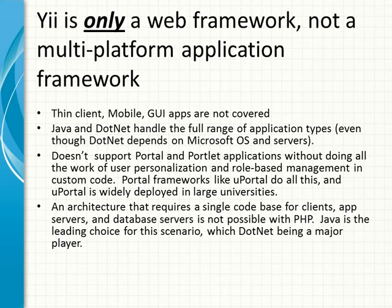Also, an architecture that requires a single code base for clients, such as app servers and database servers, is not really possible with PHP. Java is the leading choice for this scenario, with .NET being a major player. An example of this would be a Java application, which allows Java code in the database tier, in the business tier, in the client tier, as well as for GUI apps and front-end applications.